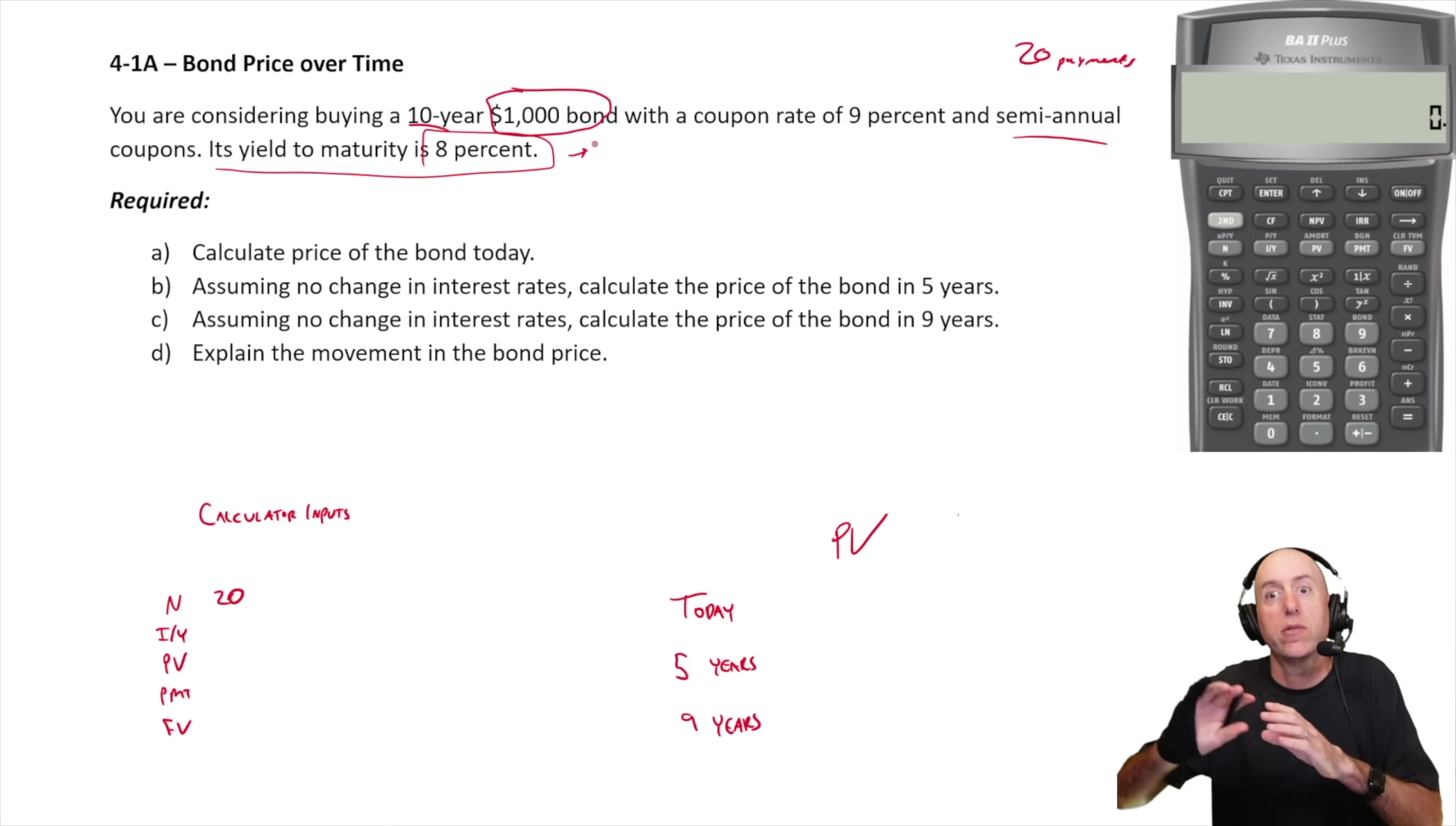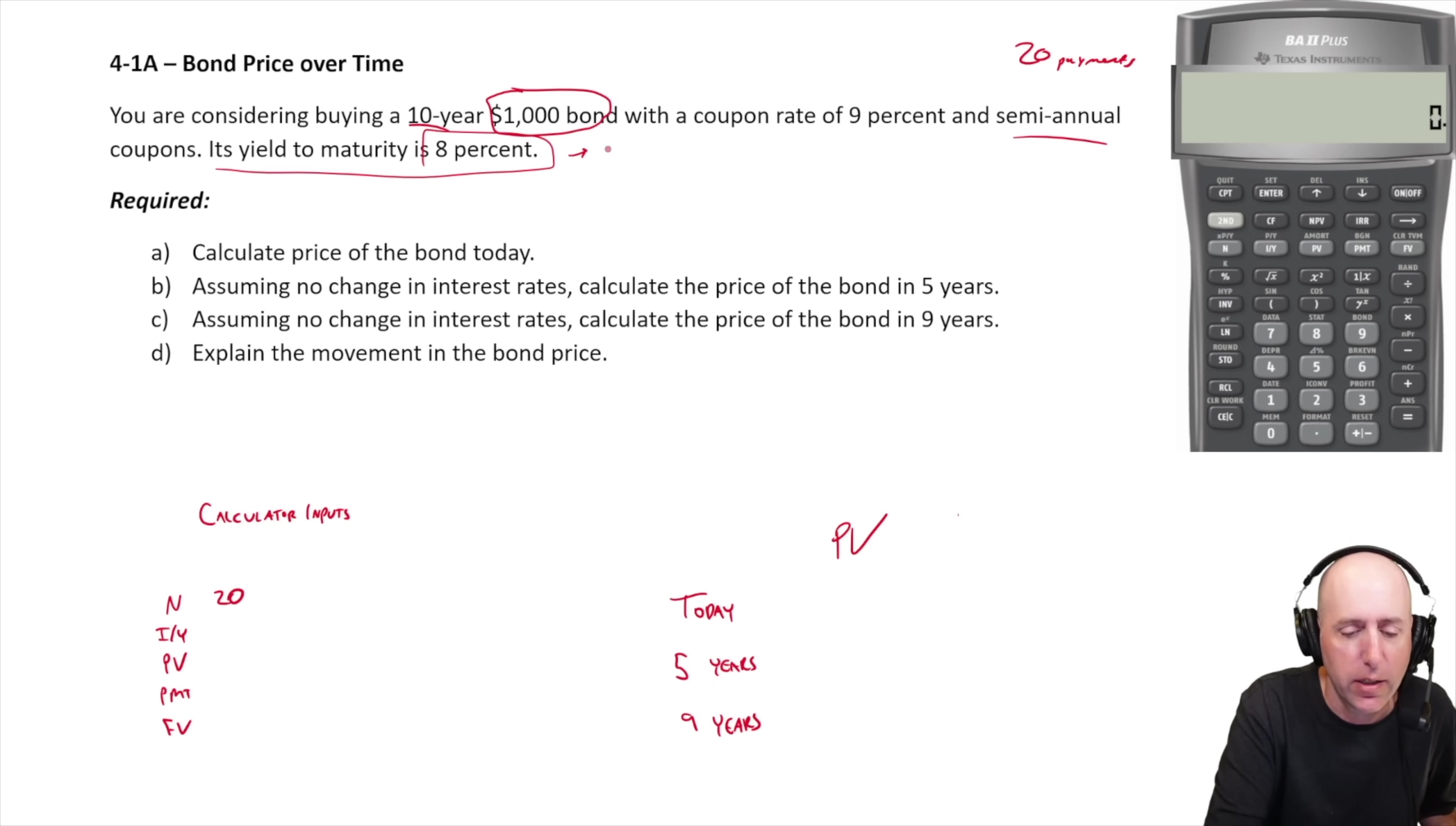Our I/Y is this yield to maturity, and the yield to maturity is 8%. But remember that when you're quoted interest rates, you're quoted for the year. We need to break that into six months. So for a six month period, that's half, it's 4% per semi-annual payment, per six month period.